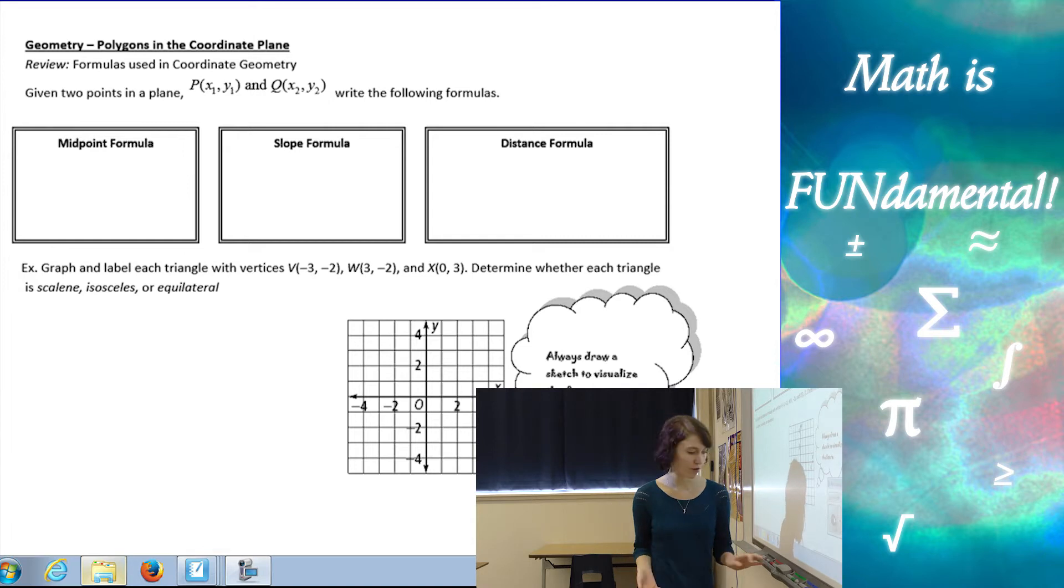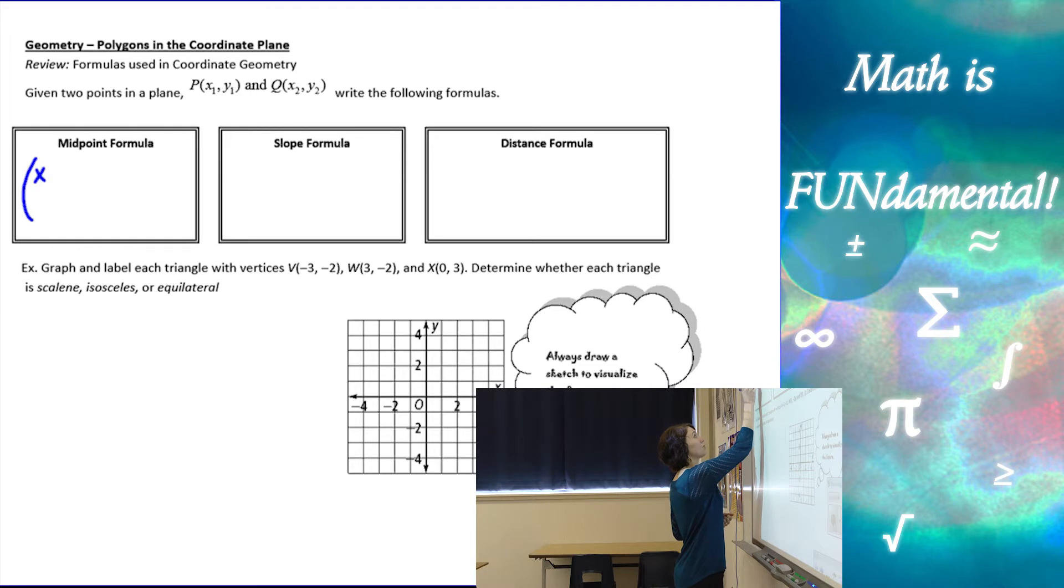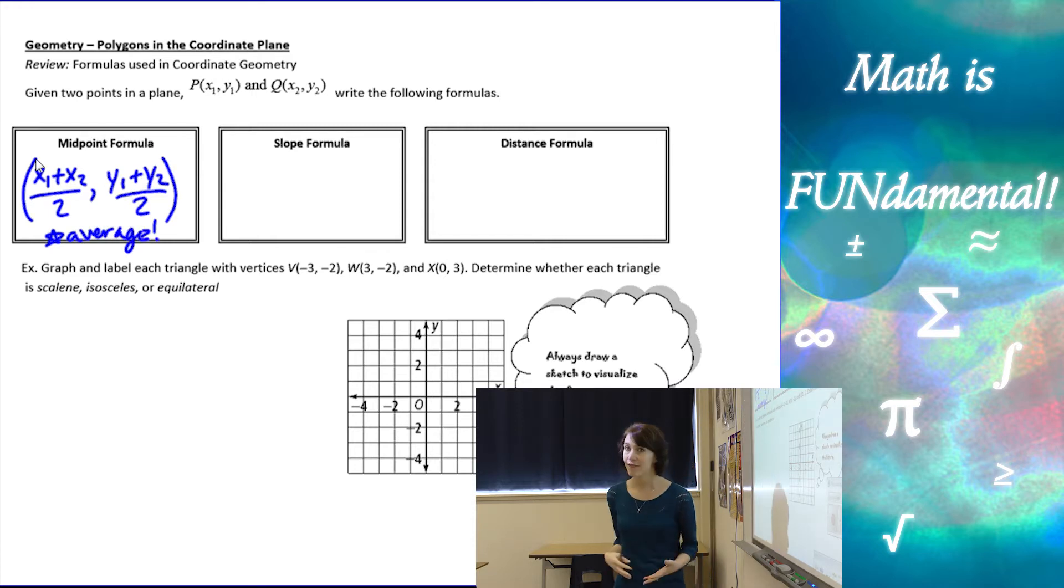So let's just review a few of our formulas. Given two points x1, y1 which is p, and x2, y2 or q, we have the midpoint formula, which is x1 plus x2 over 2, and y1 plus y2 over 2. The way I like to remember midpoint formula is think middle of two numbers is the average. I just need to find the average of the x's and the average of the y's, and I've got it.